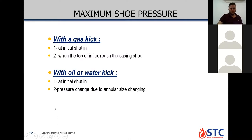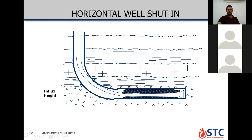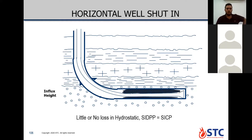If shut-in casing pressure exceeds the maximum allowable shut-in, formation will break down. For horizontal wells: the influx in the horizontal section has a smaller height, so shut-in drill pipe pressure approximately equals shut-in casing pressure. But once the influx moves to the vertical section, shut-in casing pressure suddenly increases while shut-in drill pipe pressure stays the same, according to the change in the height of the influx. So while drilling in horizontal section, shut-in drill pipe pressure equals shut-in casing pressure.